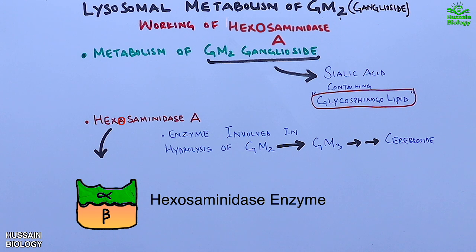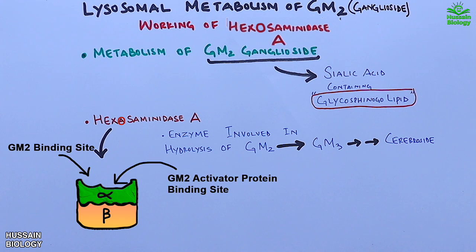In this diagram we can see the GM2 activator binding site on hexosaminidase A enzyme, and on the left we have the GM2 binding site where the lipid molecule binds.